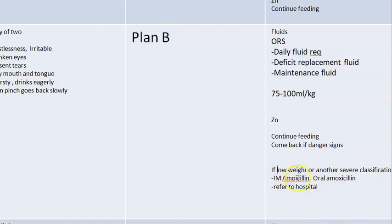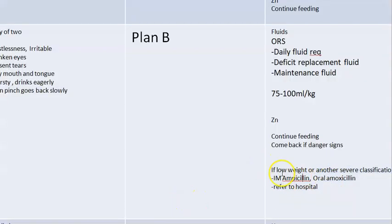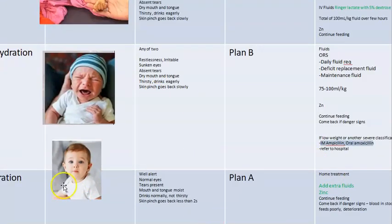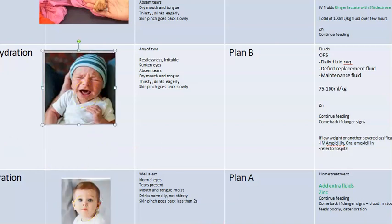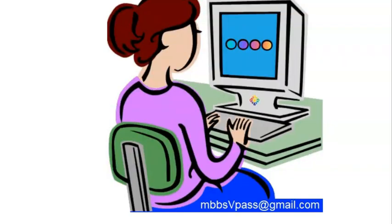If the child additionally has low weight or another severe classification, you should give ampicillin or amoxicillin and refer to hospital. So ampicillin or amoxicillin is only added when the child has low weight or an additional severe classification alongside some dehydration.